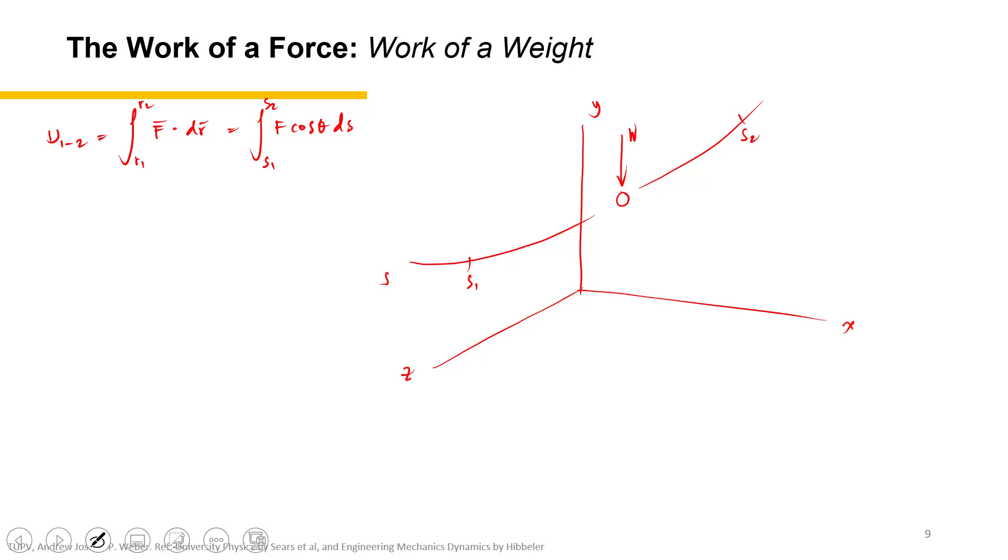So let's add the position vector r1, position vector r2. This is the origin, and of course we should have a displacement—small differential displacement. Let's add the height. Let's say this is the y1 and this is the y2, y2 being higher than y sub 1. Okay, so let's use this part.